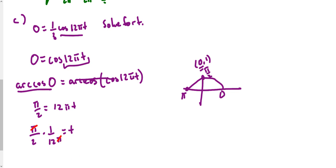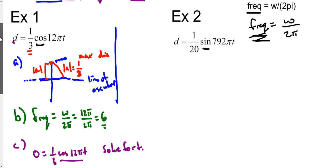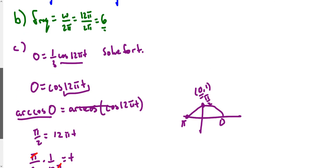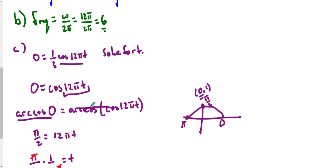The π's cancel out and we're left with T = 1/24. That is the closest value — when time is 1/24 (whatever the unit of time may be). We can see how we're using inverse trig and solving this equation to cancel those out.